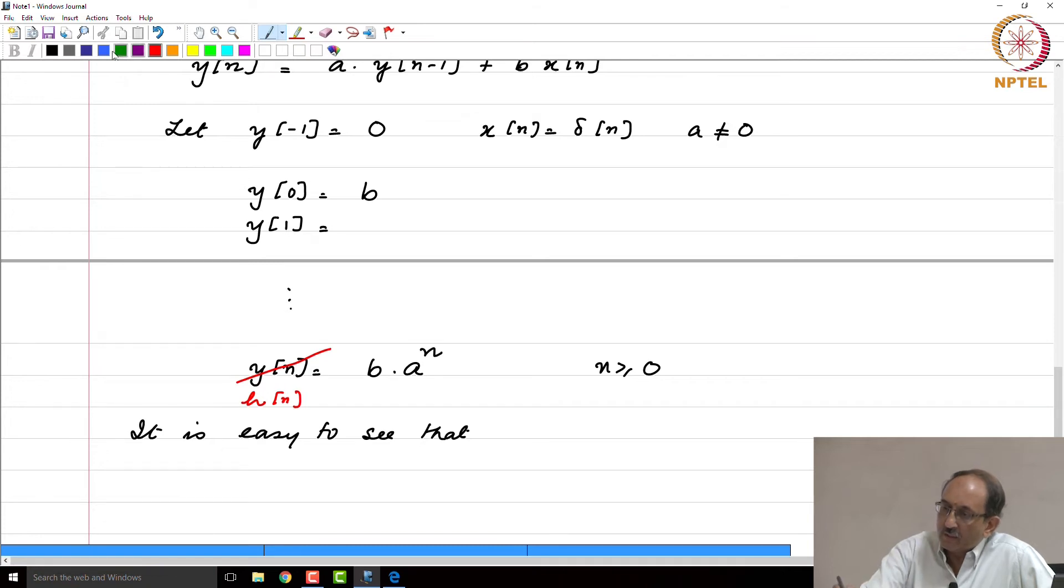It is easy to see that h(n) - let us go back and look at the classification we have given in terms of impulse response duration. Is this IIR or FIR? That is the question.